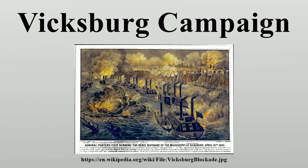Opposing Forces — Union: Maj. Gen. Ulysses S. Grant's Union Army of the Tennessee started the campaign with about 44,000 men, which grew by July to 75,000. The army was composed of five corps: the 13th Corps under Maj. Gen. John A. McClernand, the 15th Corps under Maj. Gen. William T. Sherman, the 17th Corps under Maj. Gen. James B. McPherson, a three-division detachment of the 16th Corps under Maj. Gen. Cadwallader C. Washburn, and a detachment from the District of Northeast Louisiana under Brig. Gen. Elias S. Dennis. The 9th Corps, commanded by Maj. Gen. John G. Parke, joined the army in mid-June.